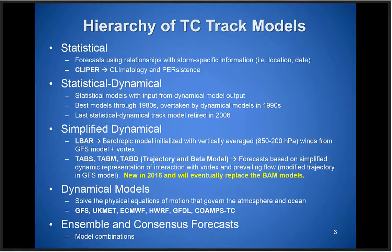We also had statistical-dynamical track models — we don't really have them anymore. These were statistical models that used input from dynamical model output, such as using GFS output as predictors to predict what a tropical cyclone would do in terms of track. They had their heyday about 30 years ago, were overtaken in the 1990s, and we got rid of the last one about 10 years ago. We also have simplified dynamical models like the L-bar, a barotropic model using vertically layer-averaged winds from GFS plus a TC vortex representation. And we have the new TAB models, replacing the beta advection models this year — trajectory models that place the tropical cyclone into the large-scale atmosphere and predict how it will move, accounting for the beta effect using a very smooth representation of the large-scale flow.